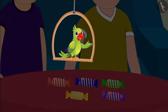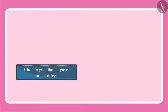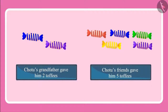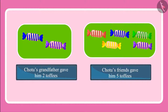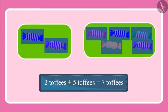So can you tell me how many toffees did Chotu get in total? Come let's see. Chotu's grandfather gave him two toffees, and his friends gave him five toffees. Two toffees and then five more toffees. Come children, let's count and see: one, two, three, four, five, six, seven. This means Chotu now has seven toffees with him.